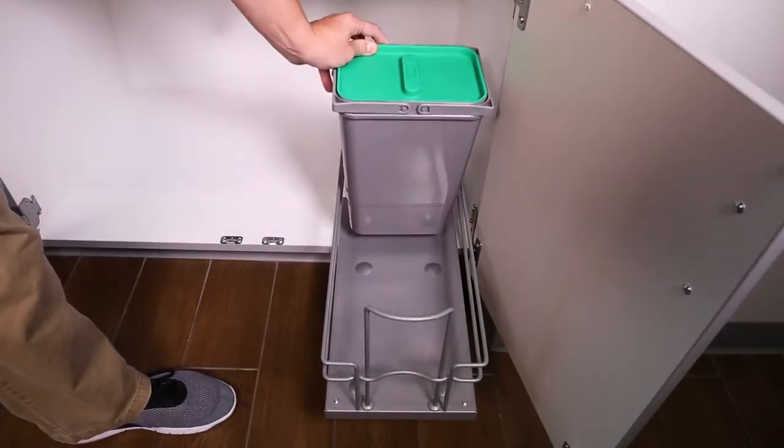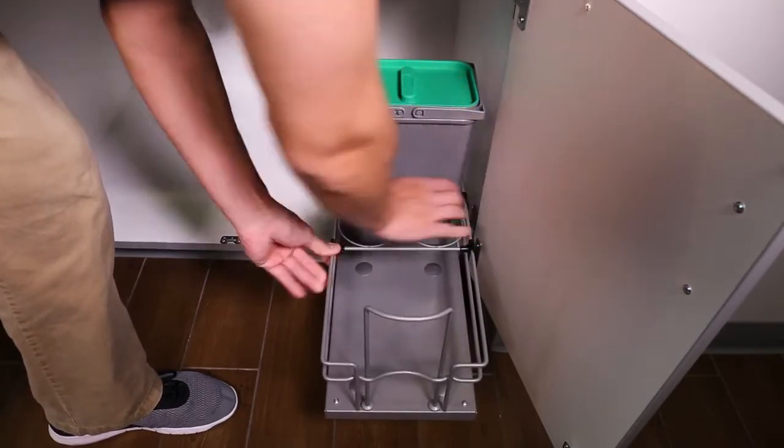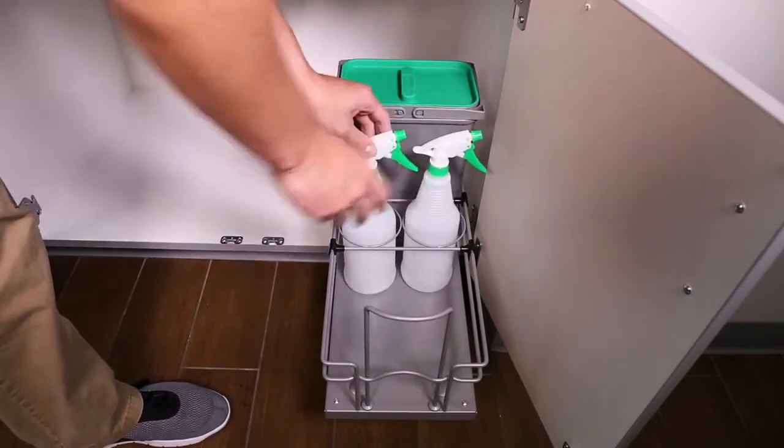For the single unit, place the waste container with lid in the back. Snap the bottle rack onto the frame and insert water bottles.